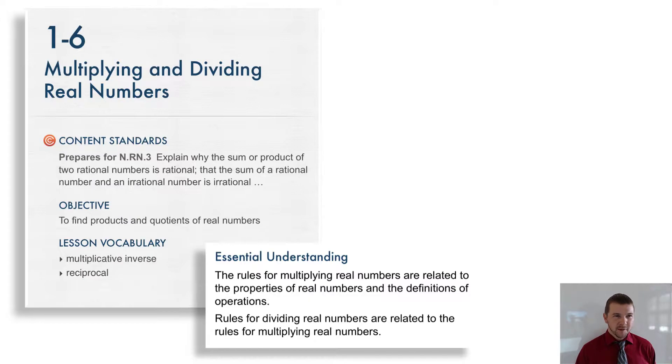The essential understanding, there are two of them. The rules for multiplying real numbers are related to the properties of real numbers and the definitions of operations. And, rules for dividing real numbers are related to the rules for multiplying real numbers.